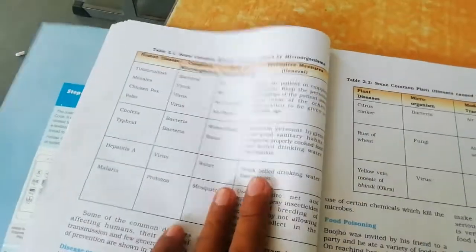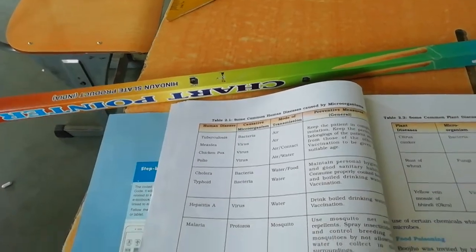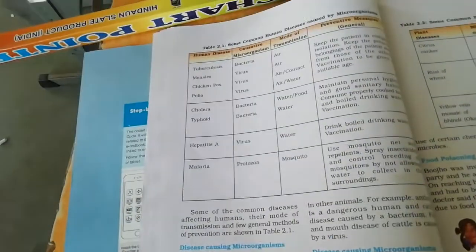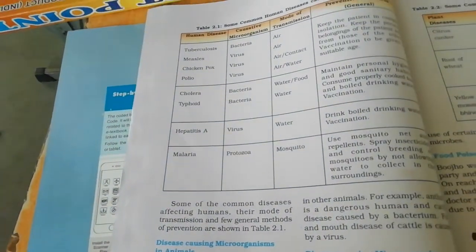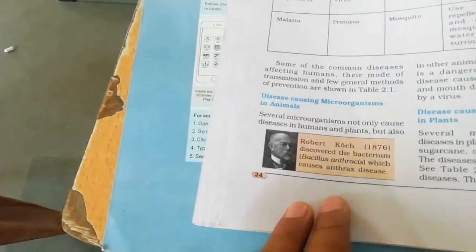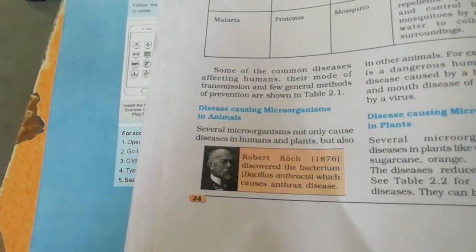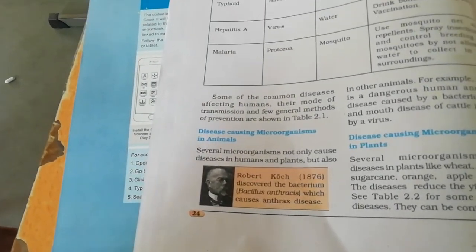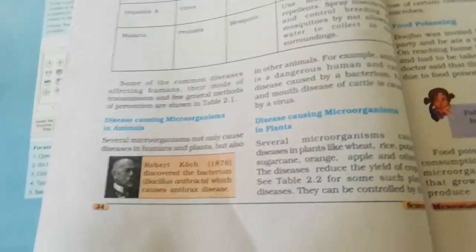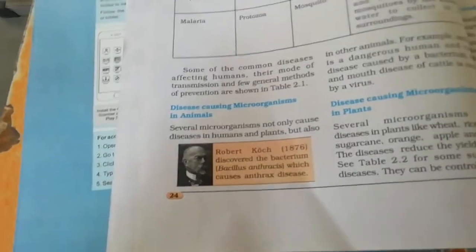We can see a variety of different diseases caused by microorganisms. One notable example is anthrax, caused by a bacterium called Bacillus anthracis, which was discovered by Robert Koch in 1876. Anthrax affects both human beings and cattle. The remaining portion about microorganisms and their effects will be covered in the next session.